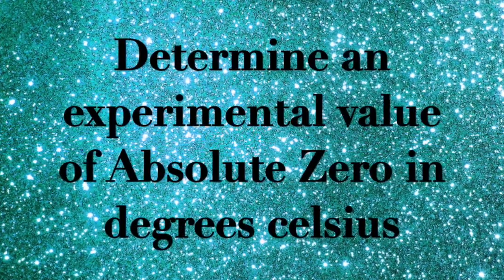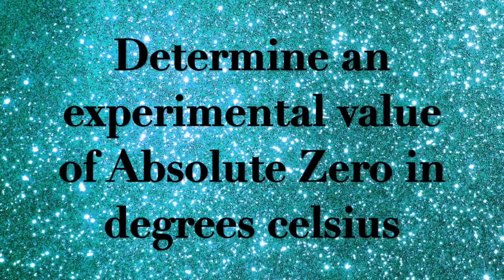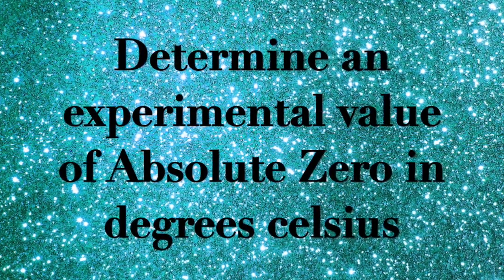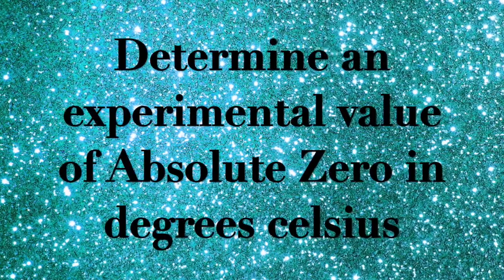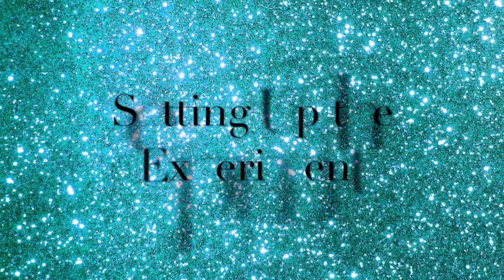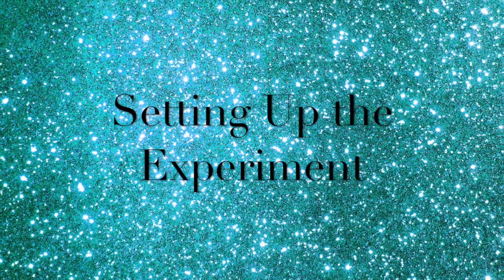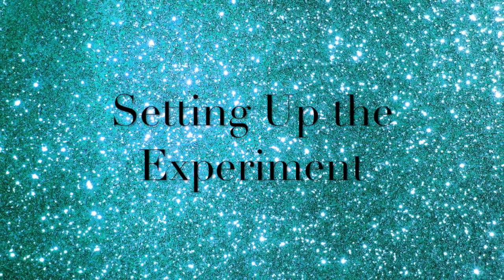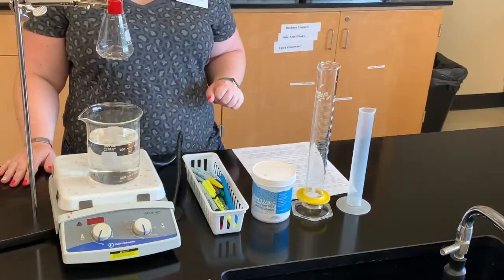Today's lab is the determination of absolute zero. You're going to be able to determine an experimental value of absolute zero by extrapolating data from a plot of temperature versus volume. Another part of this lab is to be able to graph, so make sure that you look at the handout in the lab for directions on how to make a good graph.